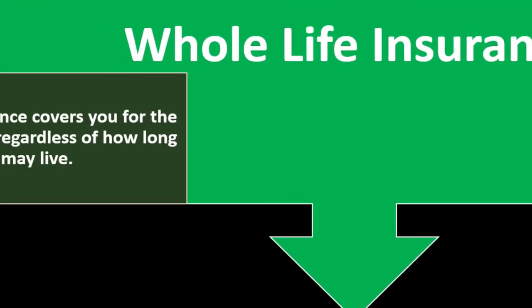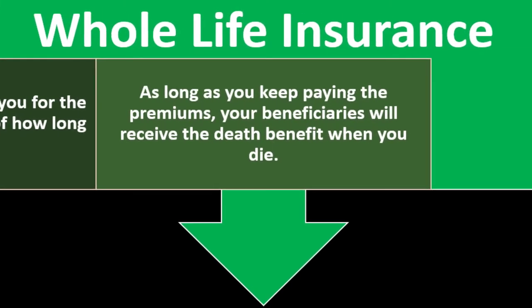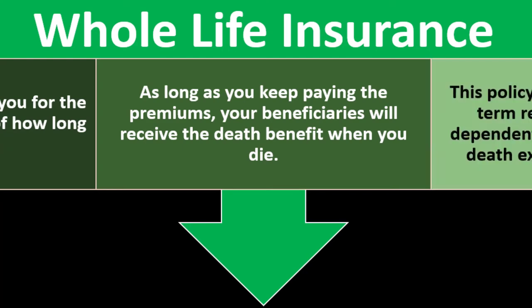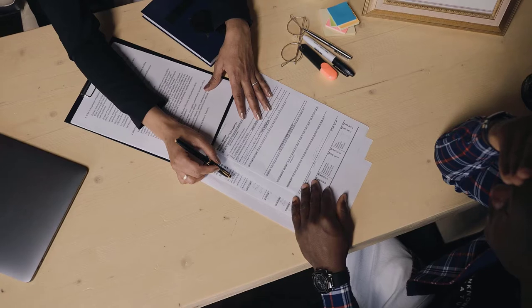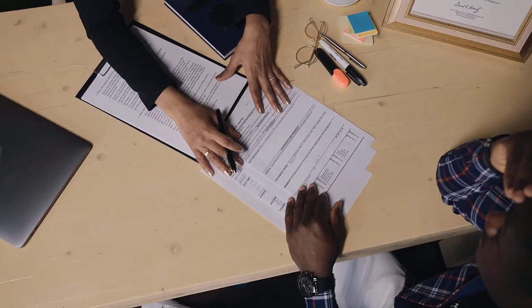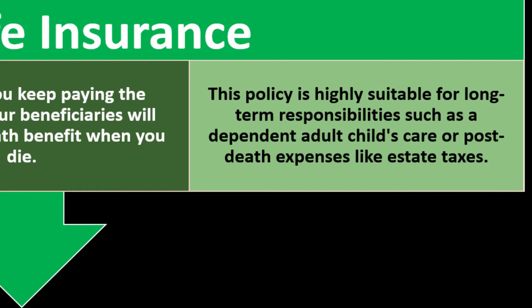First, whole life insurance. Whole life insurance covers you for the rest of your life, regardless of how long you may live. As long as you keep paying the premiums, your beneficiaries will receive the death benefit when you die. This policy is highly suitable for long-term responsibilities, such as a dependent adult child care or post-death expenses like estate taxes. The term policy is usually quite fine if you have a specific coverage period in mind — typically during your earning years when people are dependent on you. But if you have someone who will be dependent on you for life, or need coverage for things like funeral costs, whole life can be useful.